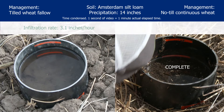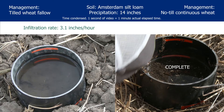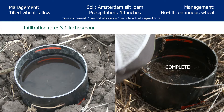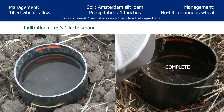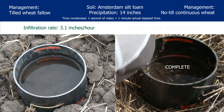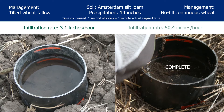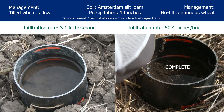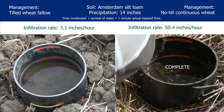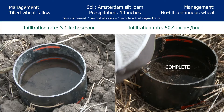Our final rates are: tilled wheat fallow can infiltrate water at a rate of 3.1 inches per hour, and right next door our no-till continuous wheat can infiltrate water at a rate of 50.4 inches per hour. Quite a difference.